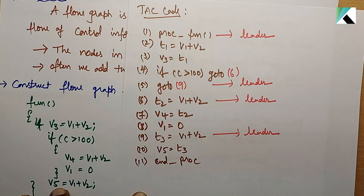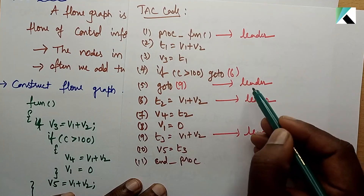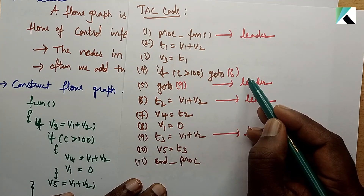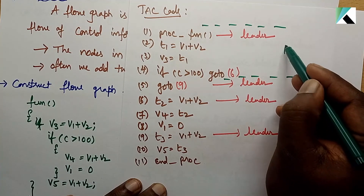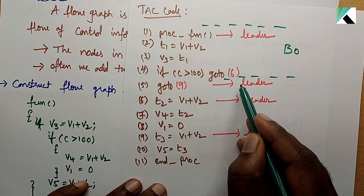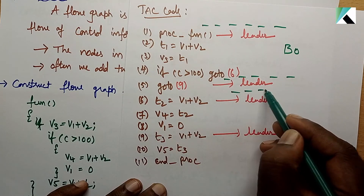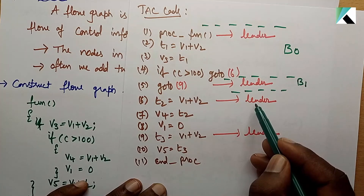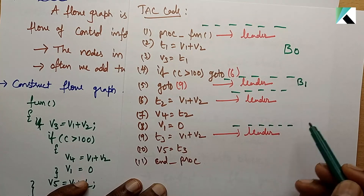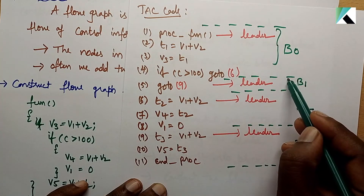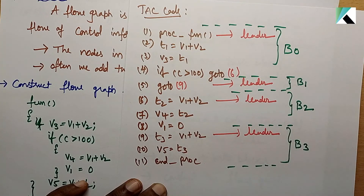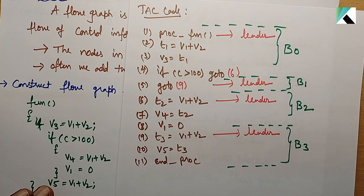We identify four leaders. Based on those leaders, we divide the code into blocks. The first block is B0, then B1, B2, and B3. So in total we have blocks B0, B1, B2, and B3. Now we have the blocks ready to construct the flow graph.